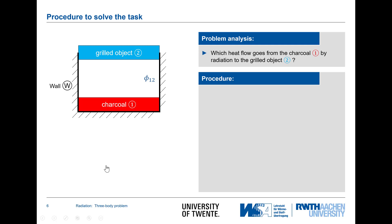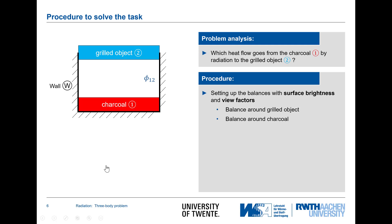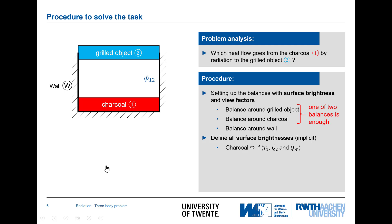Three-object problem. I will start with the surface brightness and view factors. I need the balance around the grilled object, a balance around charcoal, and around the wall — and I'm lucky, I only need two equations this way. However, I have to define all the surface brightnesses. The charcoal will depend on its temperature and the surface brightnesses from the other two objects.